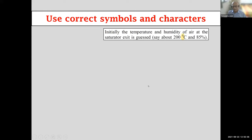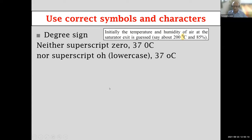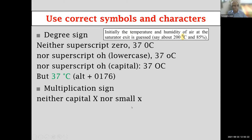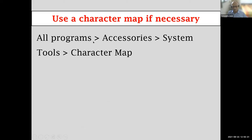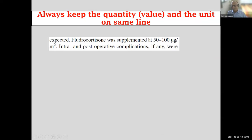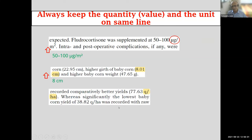Use the correct symbols: the degree sign is a proper symbol — not a superscript zero or letter O. The multiplication sign is not the letter X; the minus sign is not a hyphen. Use the proper micro symbol. If you are on Windows, use the character map to find all symbols for your chosen font. Also, do not allow a quantity to be separated from its units — '8.01' and 'centimeters' must always appear together.